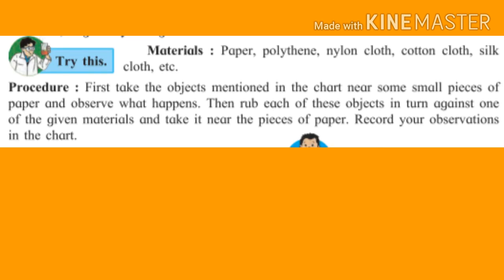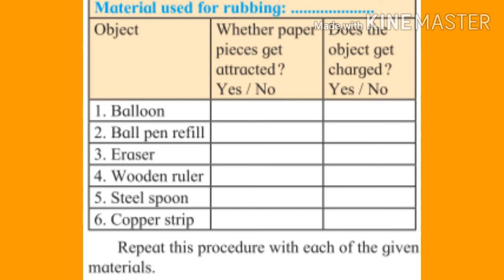Students, perform the activity given in the textbook on page number 52. Use materials such as paper, polythene carry bags, nylon cloth, cotton cloth, silk cloth, etc. Rub these substances against the materials given in the table — balloon, bulb, refill eraser, wooden ruler, steel spoon, copper strip — and record your observations in the table. Write this activity in your classwork, last 10 pages.